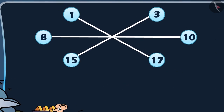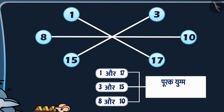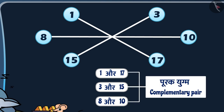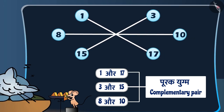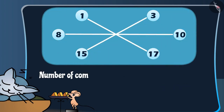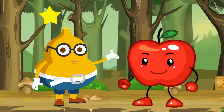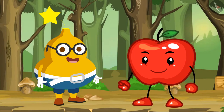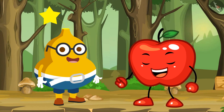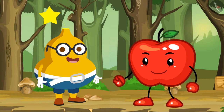यहाँ एक और सत्रह, तीन और पंद्रह और आठ और दस पूरक युग्म यानि कॉम्पलिमेंट्री पेयर्स बनाते हैं। इसलिए हम कह सकते हैं कि स्टार पहेली का क्रम, स्टार बनाने वाले पूरक युग्मों की संख्या है। फ्रूटी का उत्तर सुनते ही तुरंत अबी कहता है: बिलकुल सही। अब मेरी दूसरी पहेली को ध्यान से सुनो।